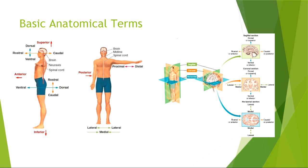We have two more terms: rostral and caudal. Rostral means towards the nose side; caudal means towards the tail side. A good Latin memory trick: 'in cauda venenum' — the venom is in the tail — cauda, caudal, tail. So basically the front nose part of the animal is rostral, and the tail or back part is caudal. Then we have anterior and posterior: anterior means towards the front, posterior means towards the back. That's easy.